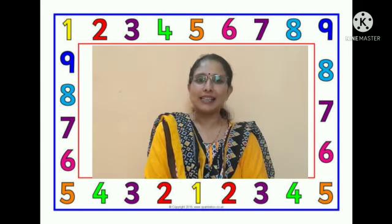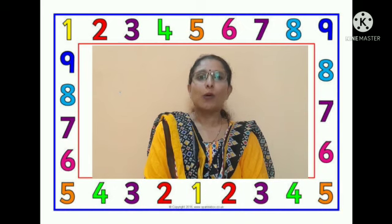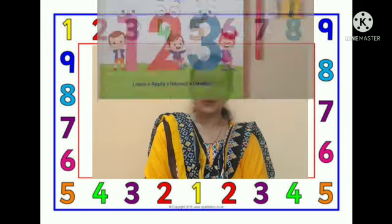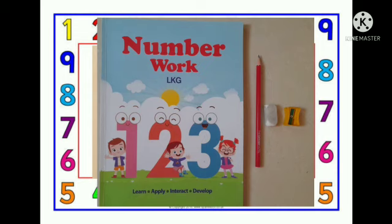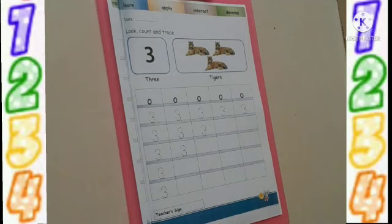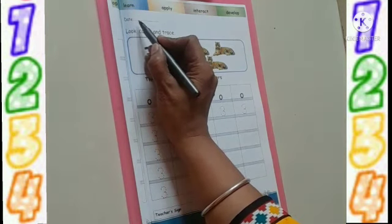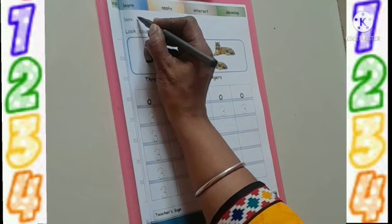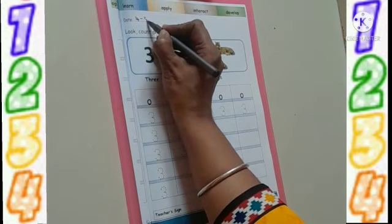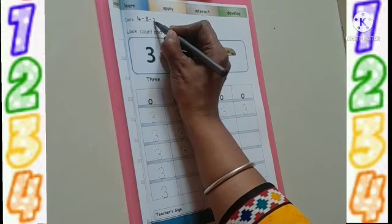You have already learned these numbers in 3kg. So let us revise them in your workbook. What are the materials which you require children to write 3 and 4? You require workbook, your number workbook, and a pencil and eraser, a sharpener if required. Are you all ready for the writing session? First what we have to write — you all know, right? So first we will write the date. The date is 4-8-21.